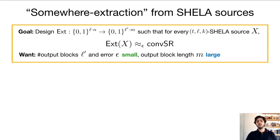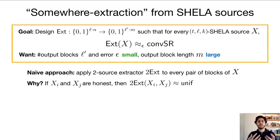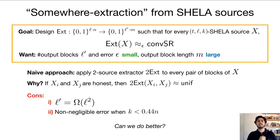We're going to start with a naive construction. One way of designing a SoMa extractor is just to take any two-source extractor and apply it to every pair of blocks of a SHELA source. The reason why this works is that as long as we have two honest blocks in the SHELA source, the output of the extractor on these two honest blocks will be close to uniform, and this is enough to get us something close to a SoMa random source. However, there are some downsides: the number of blocks in the resulting SoMa random source is quadratic in the number of SHELA blocks, and second, we can only get negligible error when the min entropy of the honest SHELA blocks is very large.